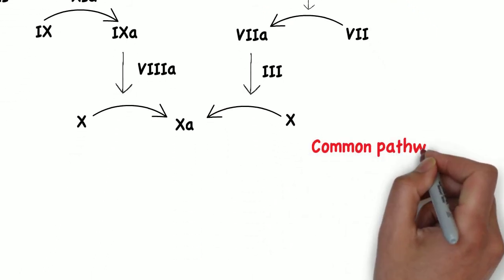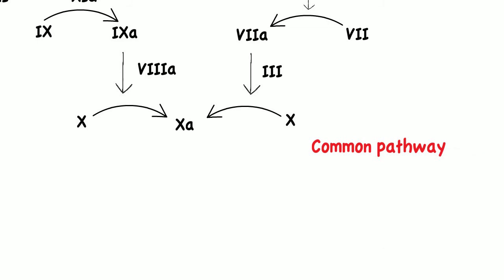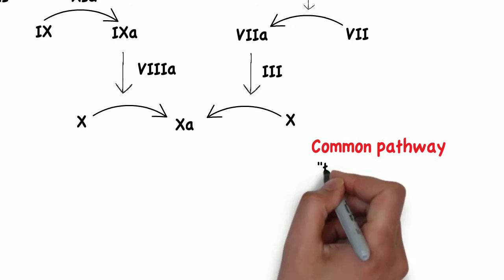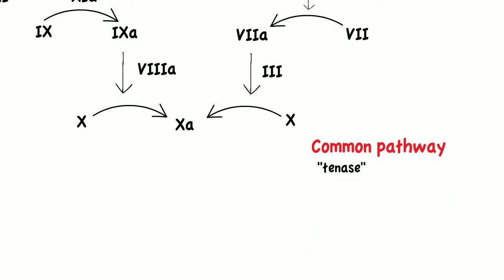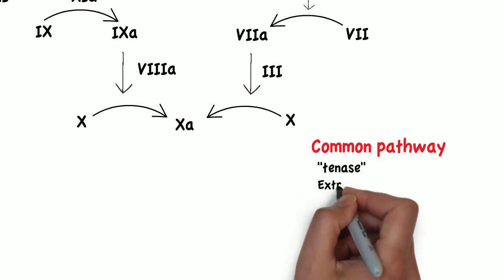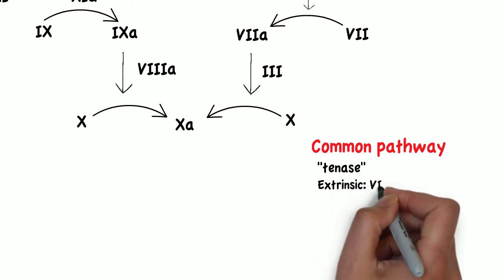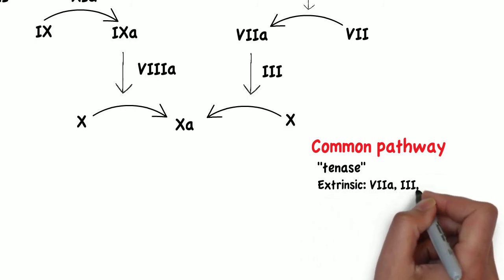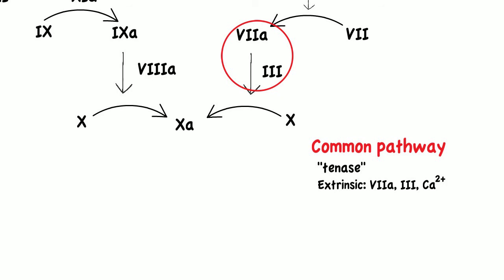The common pathway begins with the activation of factor 10. The cleavage of factor 10 to factor 10a is done by the complex named 10a's. 10a's has two forms: an extrinsic form consisting of factor 7a, factor 3, and calcium.